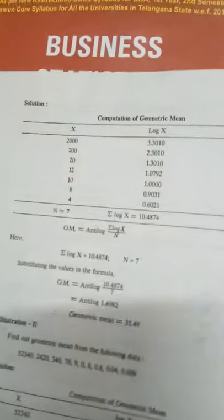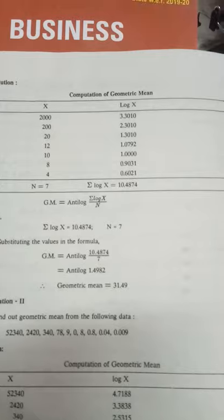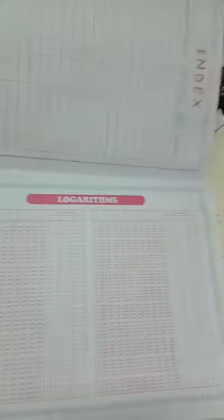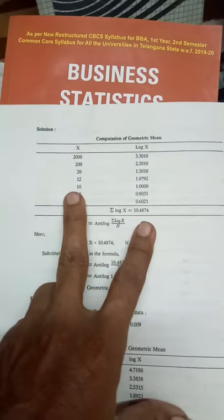If any number is below 100, we have to see under 0. If I want to see for 12, 12 under 0. 12 under 0 is 0, 7, 9, 2. 0, 7, 9, 2. Like 10, two numbers are there.